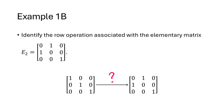Here's another example. Again, we've started with the identity matrix and resulted in this elementary matrix E2. What row operation did we do? What we did was we swapped row 1 and row 2.